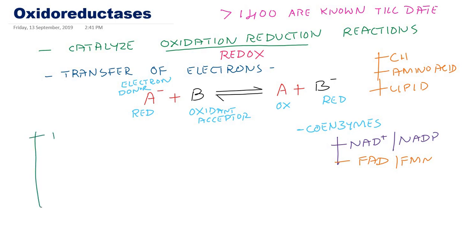They can be sub-classified as dehydrogenase. Wherever you find an enzyme ending with dehydrogenase, they are oxidoreductases or class one enzyme. Also reductases and oxidases.